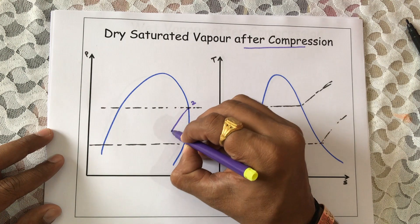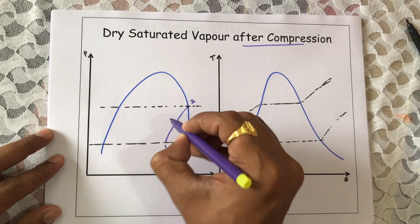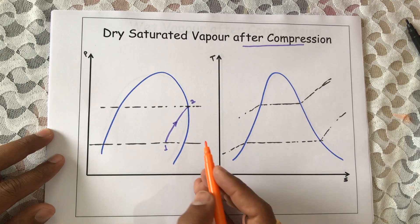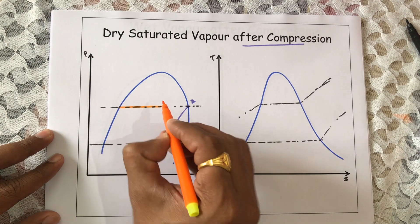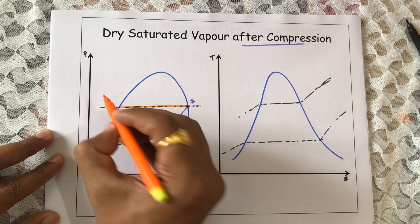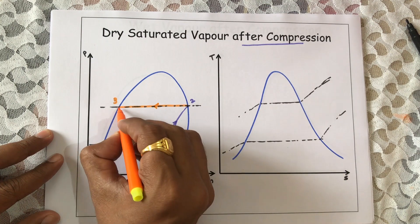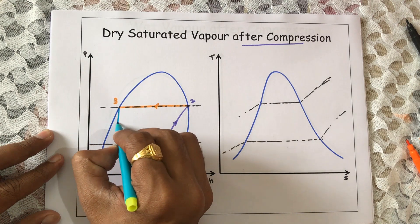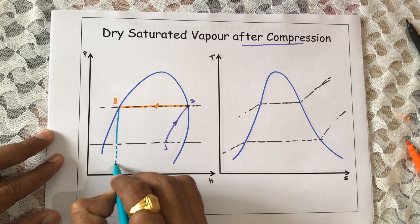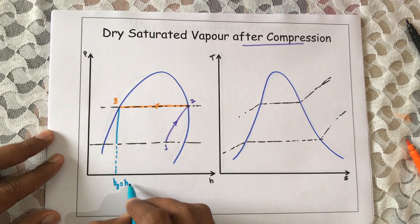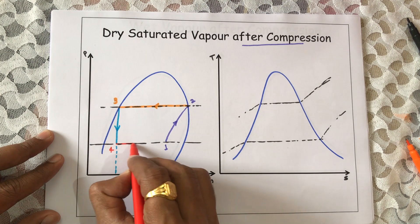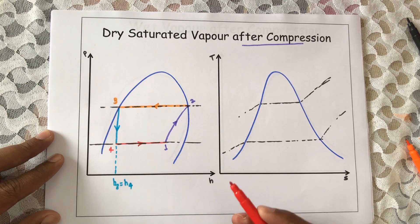Somewhere we get point number one. Process 1 to 2 is isentropic compression. Then 2 to 3 is a constant pressure heat rejection process. Then 3 to 4 is isenthalpic expansion, where h3 is equal to h4.